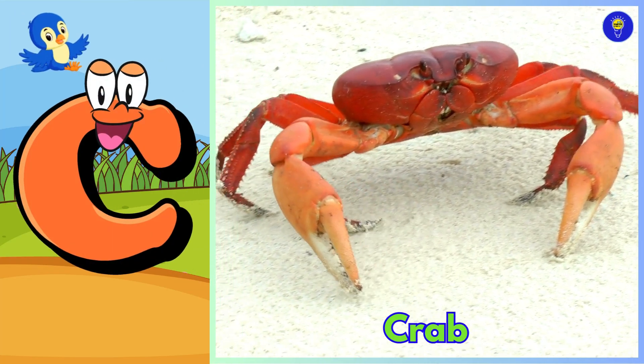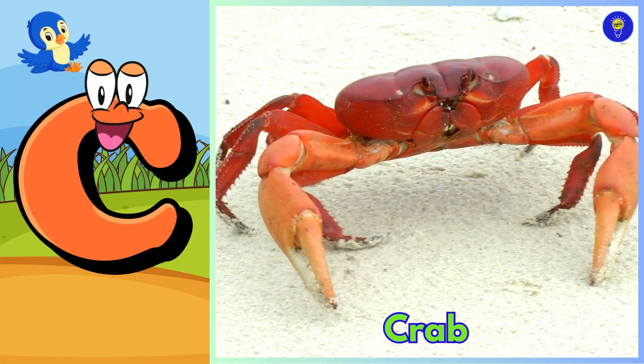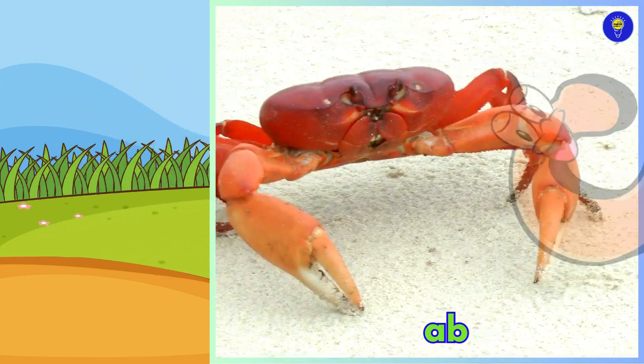C is for crab, kuh, crab. D is for dolphin, duh, dolphin.